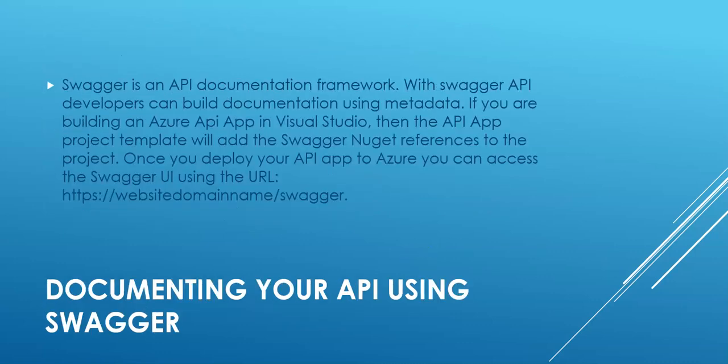Documenting your API using Swagger: Swagger is an API documentation framework. With Swagger, API developers can build documentation using metadata. If you are building an Azure API app in Visual Studio, the API app project template will add Swagger and you get a reference to the project. Once you deploy your API app to Azure, you can access the Swagger UI using the URL: your domain name slash swagger.